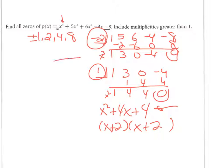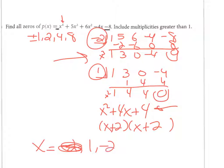So I have zeros of +1 and negative 2 from synthetic division, plus (x + 2)² giving negative 2 two more times. That means negative 2 has multiplicity three — it occurred three times out of the four zeros for this degree-4 function.